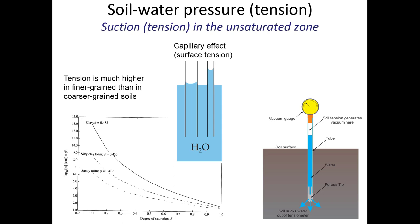You can graph the suction pressure on a logarithmic scale to show different soil types on the same chart. As saturation increases, the suction tension decreases — that's why we have the declining potential rate of infiltration. As the rainstorm continues, more soil voids fill up, the degree of saturation increases, and the tension goes lower.